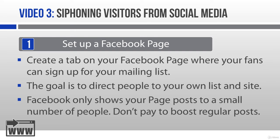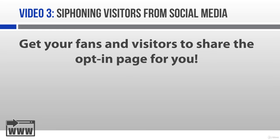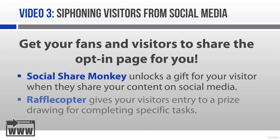Don't even bother paying to boost regular posts. You might consider paying to get your fans to see a special offer where you give them something valuable in exchange for their email address, but don't pay for regular posts. A free and better way to get your lead magnet in front of as many people as possible is to get your fans and visitors to share the opt-in page for you. One super cool way to do this is by using an app called Social Share Monkey, which unlocks a gift for your visitor when they share your content with their friends on Facebook, Twitter, or Google+. Another tool you can use is Rafflecopter, which gives your visitors an entry into a prize draw for each specific task they complete — things like joining your mailing list or sharing your contest with others on social media. Social Share Monkey and Rafflecopter are great tools for expanding both your Facebook page likes as well as your mailing list.